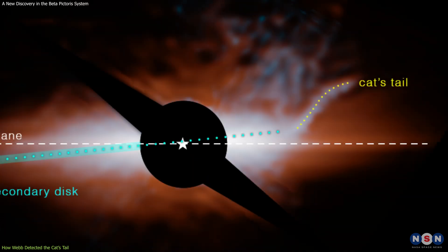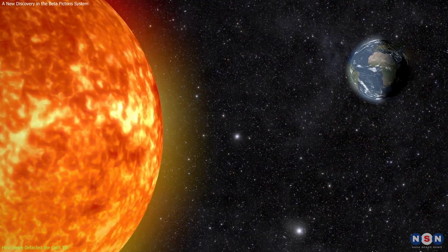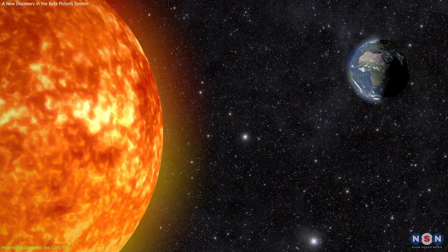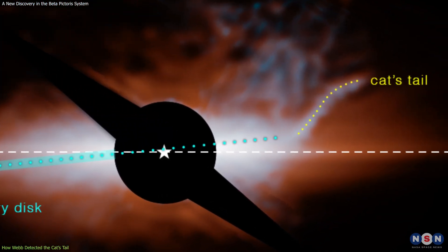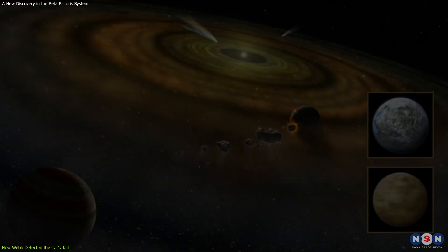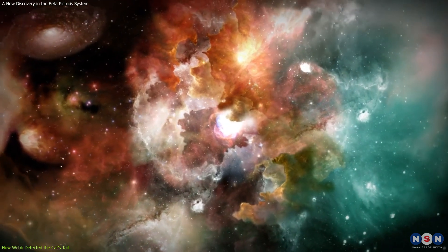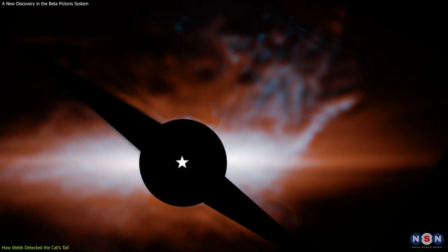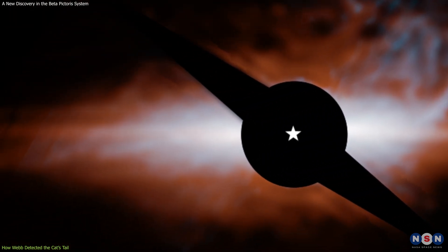The cat's tail is a thin and elongated structure of dust, about 10 billion kilometers long, or about 67 times the distance between the Earth and the Sun. It is oriented at a steep angle of about 60 degrees with respect to the main disk, which lies in the same plane as the two exoplanets. It is also hotter and darker than the main disk, indicating that it is made of different materials. Here is an image of the cat's tail and the secondary disk, taken by Webb.